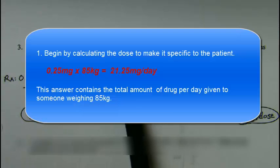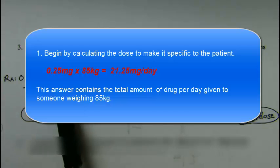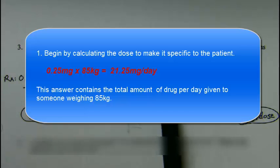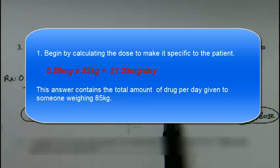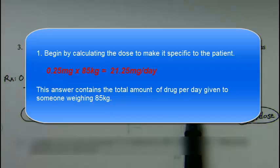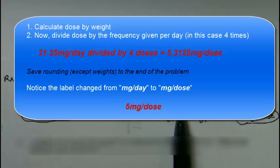The first order is 0.25 milligrams for every one kilogram, meaning we multiply by 85 kilograms, which equals 21.25 milligrams per day. This is then divided by four doses of that day to figure out the milligram per dose amount.